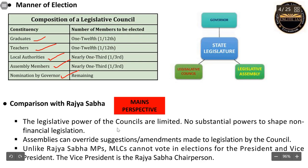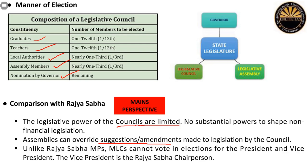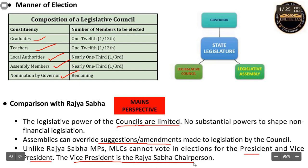The legislative powers of these councils are very limited, whereas the Rajya Sabha has significant powers, especially in non-financial legislation. The Legislative Assembly can override suggestions or amendments made by the Legislative Council, which cannot be done similarly by the Lok Sabha in the case of the Rajya Sabha. Members of the Rajya Sabha take part in elections for the President and Vice President, which is not the case for Legislative Council members. Also, the Vice President is the Chairperson of the Rajya Sabha, whereas there is no post of Vice Governor in the state.